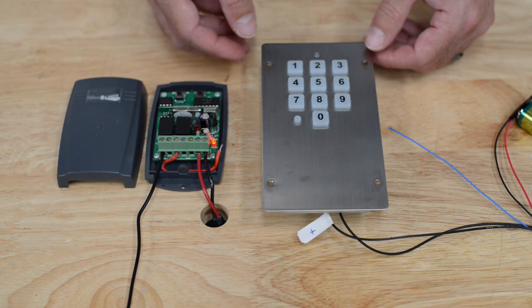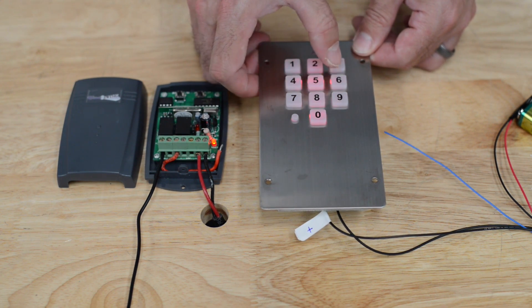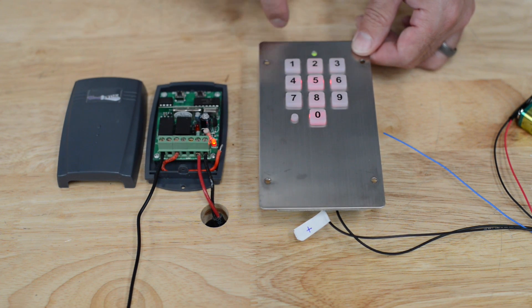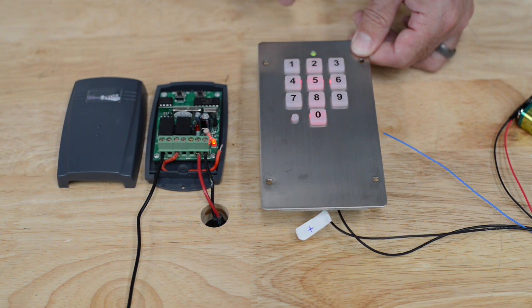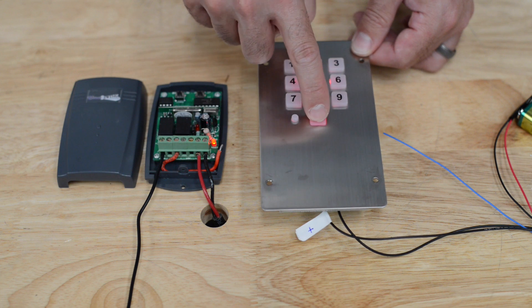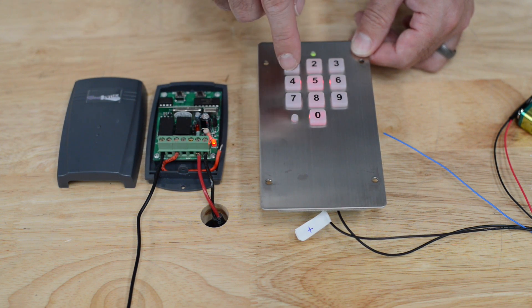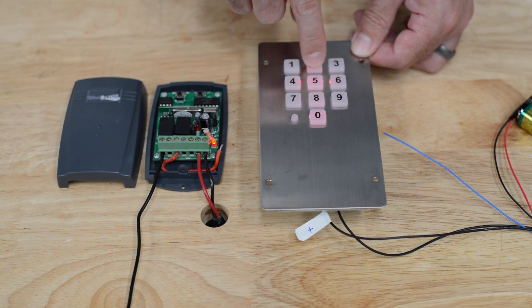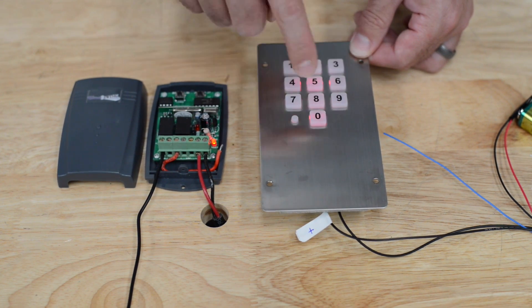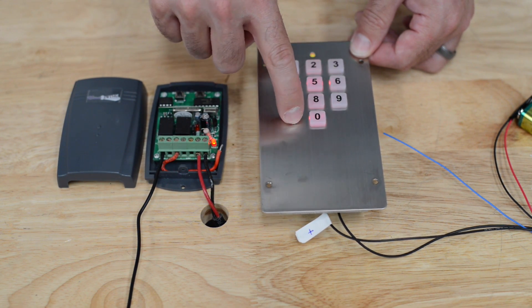Press 1, 2, 3, 4, the program button. 1 for adding a code. 01 for the slot number for that code. And then your code that you're going to use, 2626 is the code you want to use. Press the learn button.